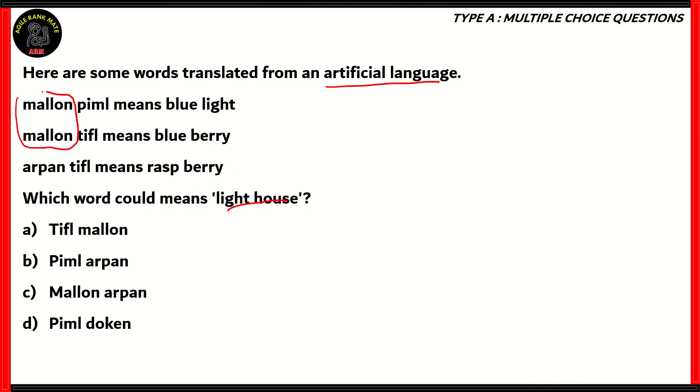Now if you can see, the word malin is repeated in two of these phrases, and in both of these phrases, the term blue is repeated. Similarly, the word tiffle is repeated in the next two phrases, and both of these phrases contain the word berry. So therefore from this correlation, we can gain that the word malin itself means blue, and the word tiffle means berry. So we have the odd one out: pimple corresponds to light, and the word arpen corresponds to rasp.